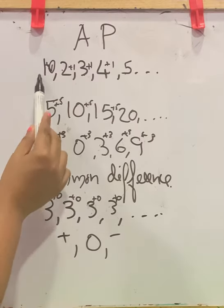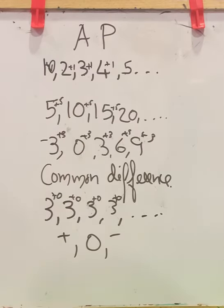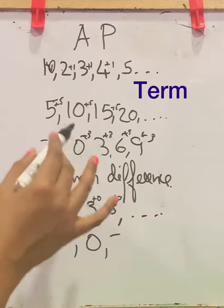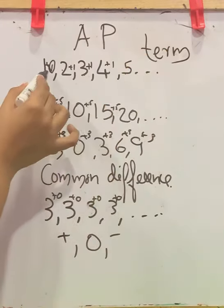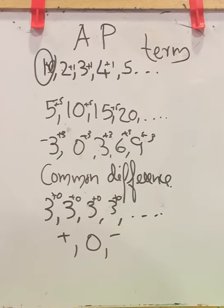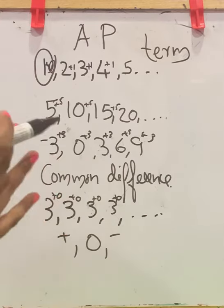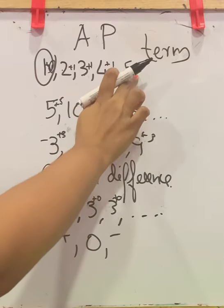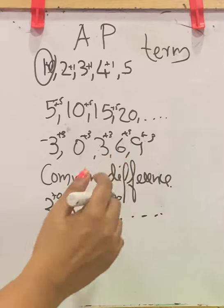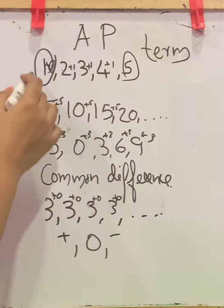Now, each number in an arithmetic progression has a particular name — that is, term. Each number in an AP is called a term. This will be the first term. If an AP is infinite, we cannot see the last term, but if it is a finite AP, then we can say there is a last term — this is the last term and this is the first term.